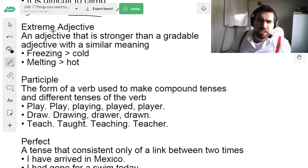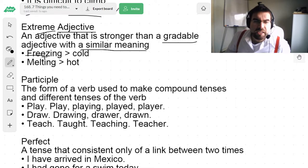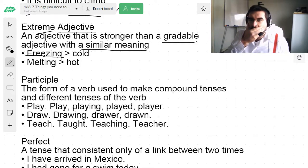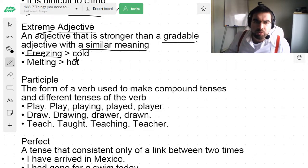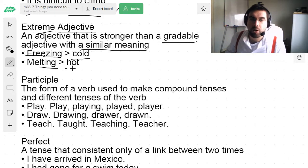Then we have extreme adjectives. An adjective that is stronger than a gradable adjective with a similar meaning. We could say freezing as opposed to cold. It's the same meaning, but much more extreme. Much stronger. Melting, hot. Boiling, hot. Frozen, very cold. Lightweight, light. Dense, heavy. Starving, hungry.